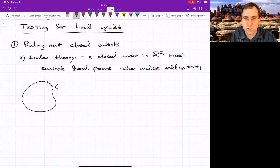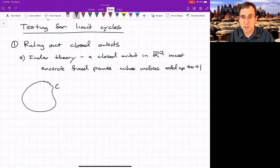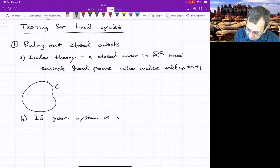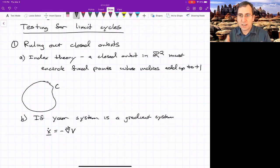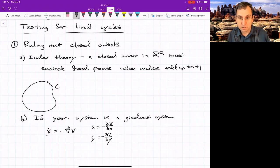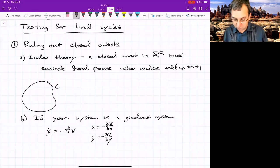Another way, which we referred to when we talked about systems with special structure in 2D, is gradient systems. So if your system is a gradient system, remember we wrote it in vector form as the negative gradient of some scalar function V, which meant x dot is negative partial V partial x, y dot is negative partial V partial y. If you have a system that has that form, there can be no periodic orbits. The only thing that's possible is fixed points.